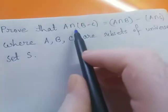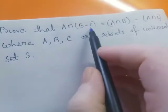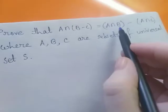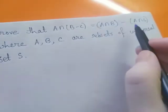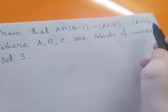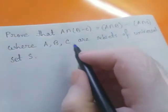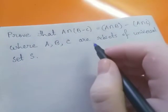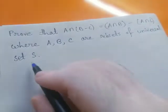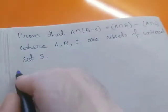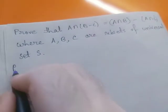Proof that A intersection (B minus C) equals (A intersection B) minus (A intersection C), where A, B, C are subsets of a universal set S.